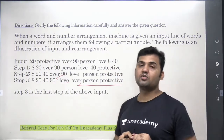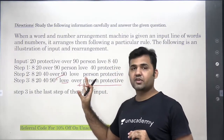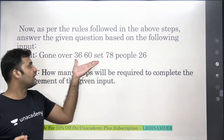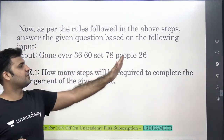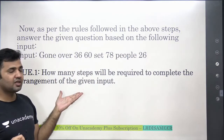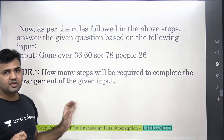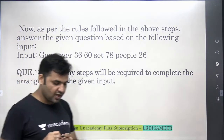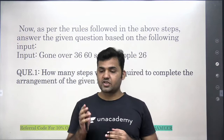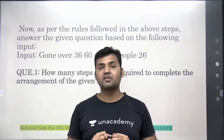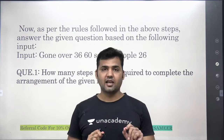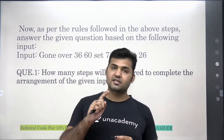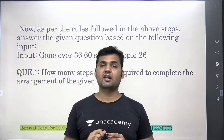Now let's learn how to do the ranking in these types of sets where two elements are moving at the same time. The element moving to the left-hand side in the first step is given a rank of 1L, and the element moving to the right-hand side is given a rank of 1R. So one particular rank is given to two elements, because in each step two elements are moving. The smallest number 26 gets rank 1L, and the largest alphabet S gets rank 1R.